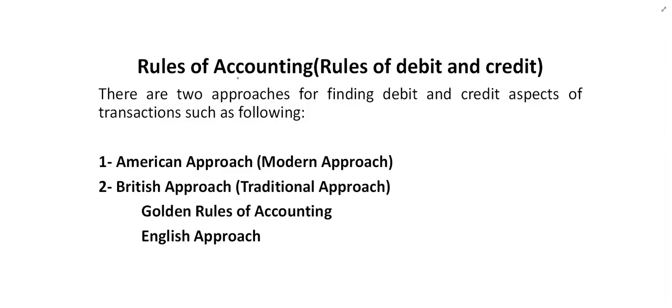In the previous slide we said the receiving aspect and the giving aspect, but if there is a complicated example, how can you identify whether an account becomes debit or credit? There are basically two approaches to identify debit and credit.